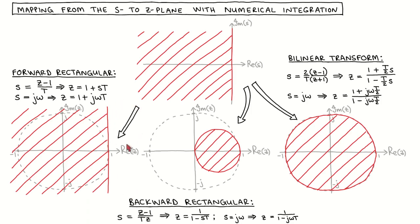We have previously seen that the stable region of the z-plane is the interior of the unit circle, which means that stable poles in the s-plane can possibly be mapped to unstable poles in the z-plane. This does not necessarily mean that the closed-loop system will be unstable, but one has to carefully examine the stability of the closed-loop system when using the forward rectangular rule for discretization.